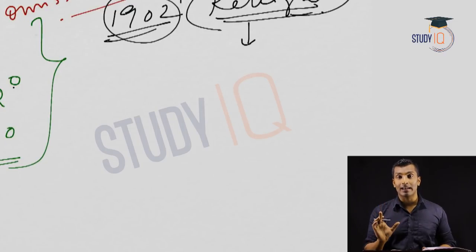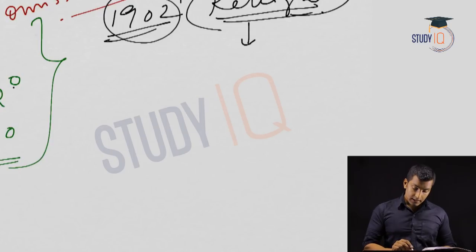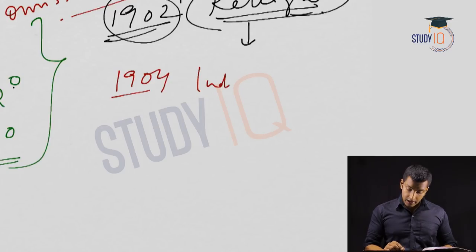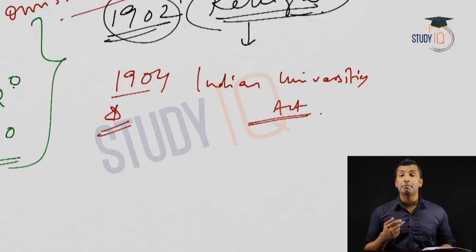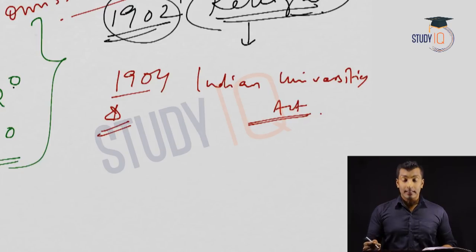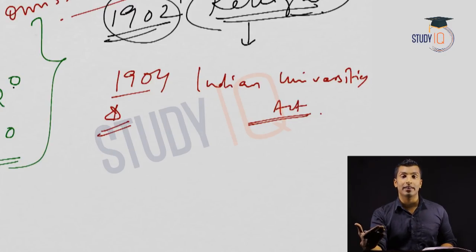Raleigh Commission was appointed by Lord Curzon for reforms in education. On its basis, the Indian Universities Act was passed in 1904. It was controversial because its purpose was basically to control universities in India. After the Hunter Commission, more universities were started, predominantly in the three presidencies — Bengal, Bombay, and Madras.